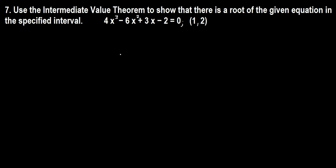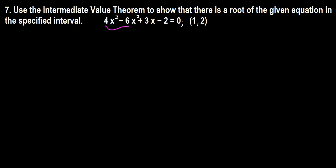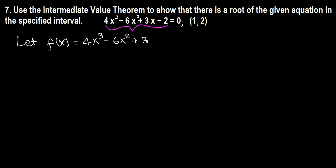In this question, the function will be just the left-hand side — this will be our function. Let's assume the function f(x) = 4x³ - 6x² + 3x - 2.